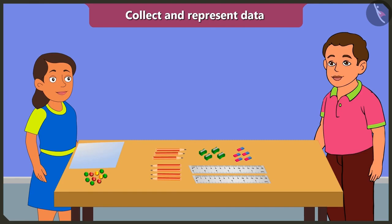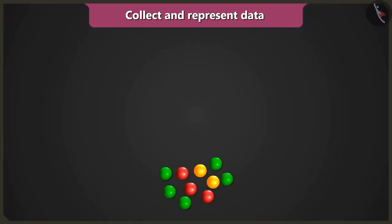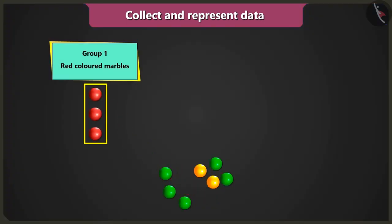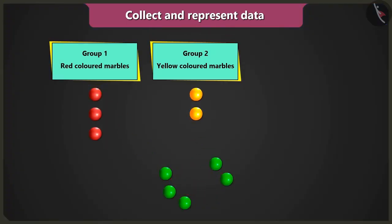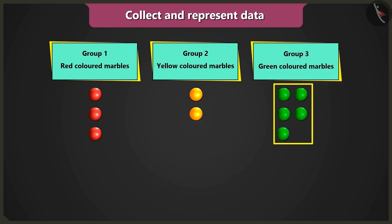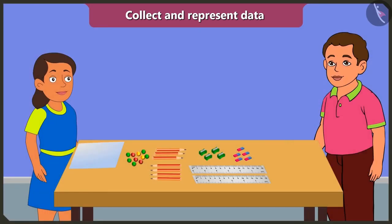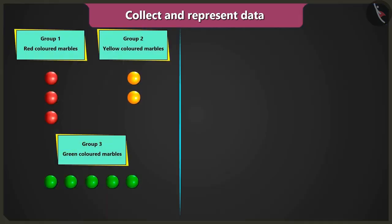Bubbly, first of all, you have to make a group of same colored marbles. First group of red colored marbles, second group of yellow colored marbles, and third group of green colored marbles. Well done.